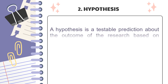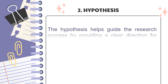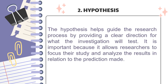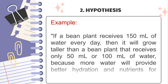Hypothesis. A hypothesis is a testable prediction about the outcome of the research based on existing knowledge or observations — an educated guess that indicates what the researcher believes will happen. The hypothesis guides the research process by providing a clear direction for what the investigation will test. Example: If a bean plant receives 150 milliliters of water every day, then it will grow taller than a bean plant that receives only 50 milliliters or 100 milliliters of water, because more water will provide better hydration and nutrients for growth.